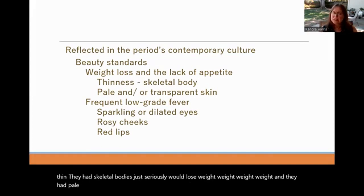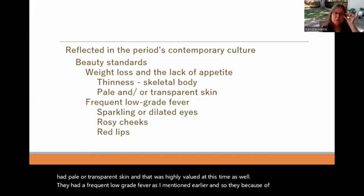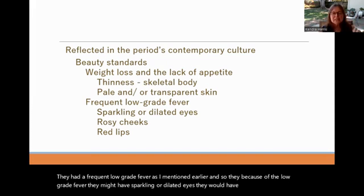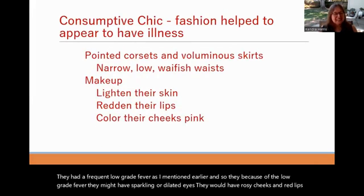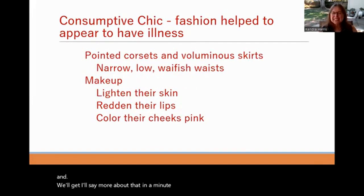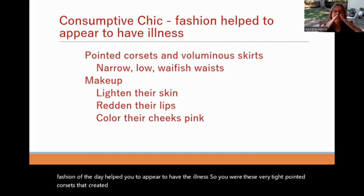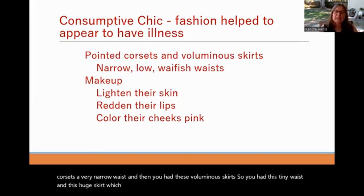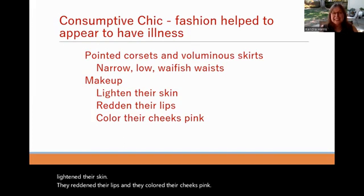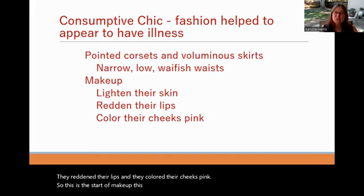This is what I'm calling 'consumptive chic' — the fashion of the day helped you appear to have the illness. Women wore very tight, pointed corsets creating a narrow waist, with voluminous skirts to highlight that tiny waist. Makeup was used to lighten skin, redden lips, and color cheeks pink. This is actually the start of makeup — it began in the 1800s as an attempt to emulate the look of tuberculosis.